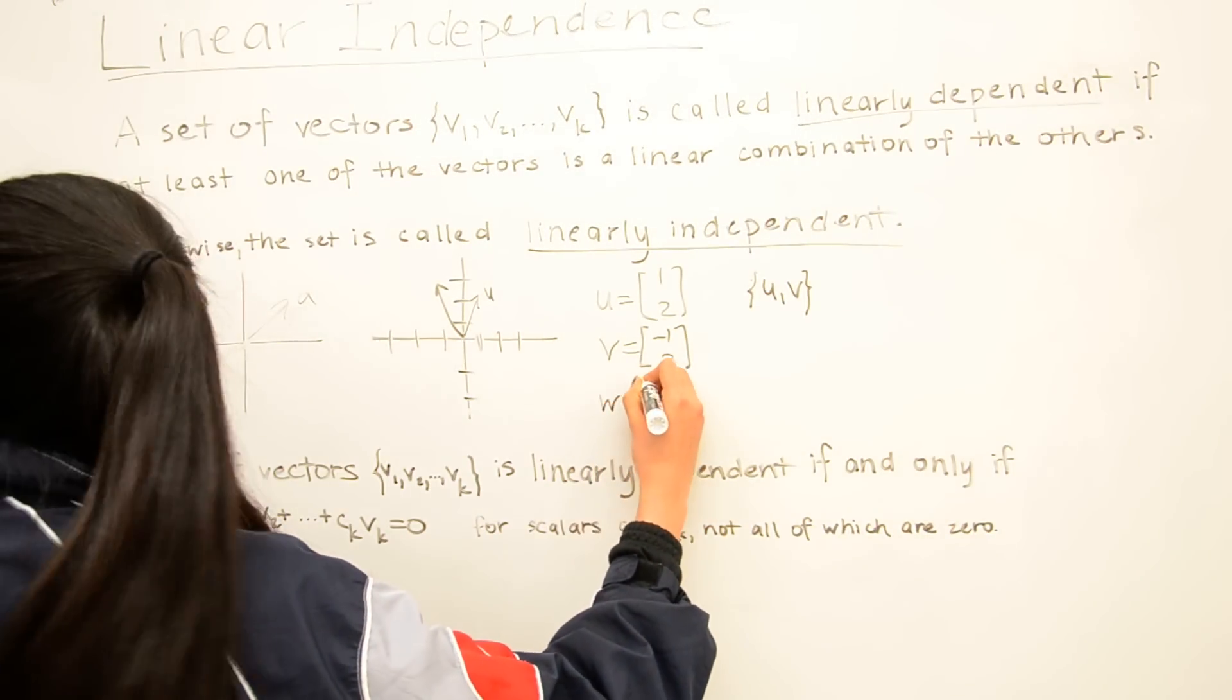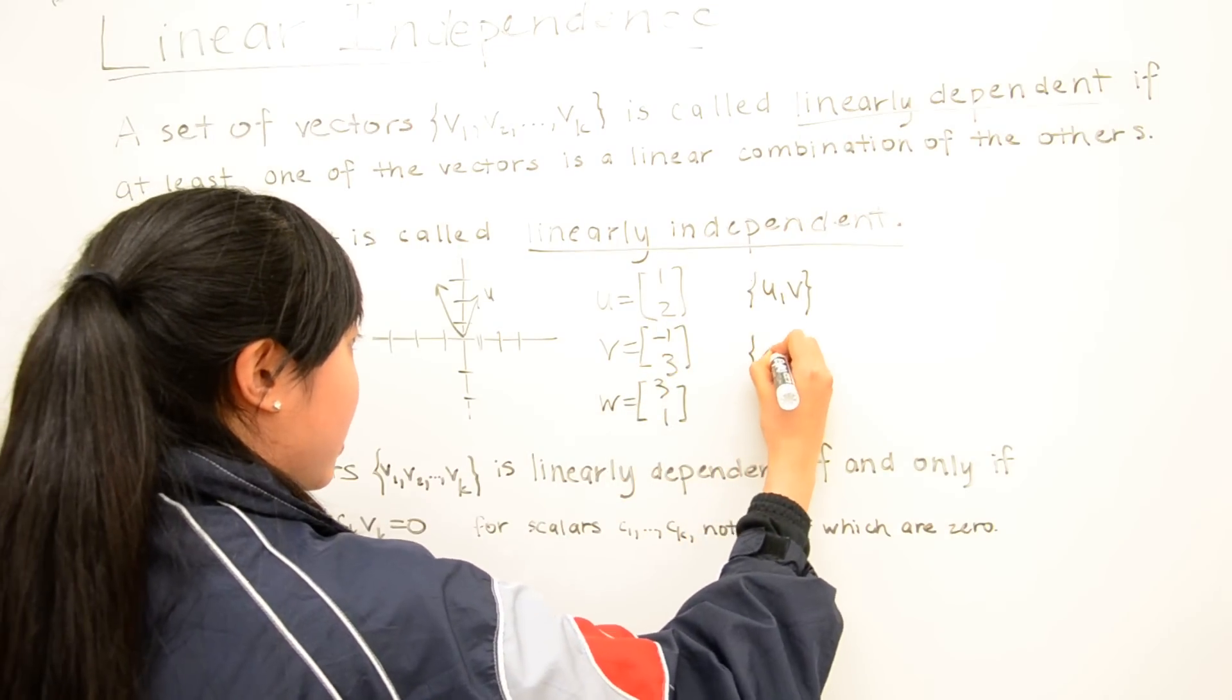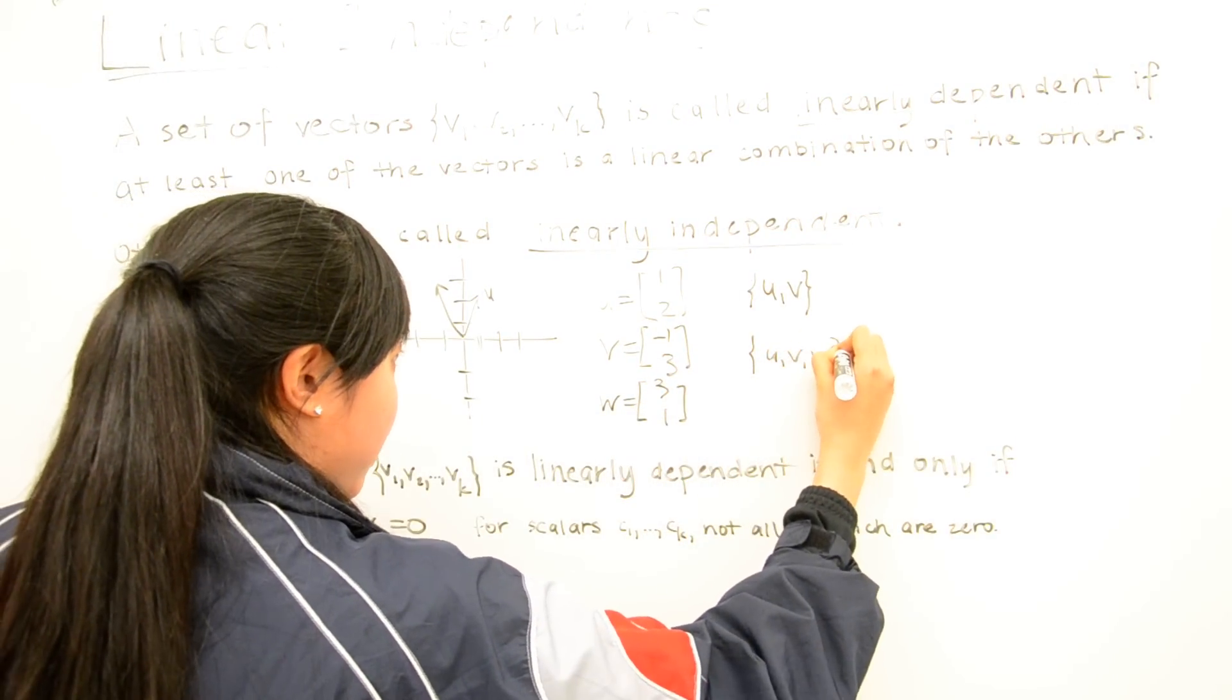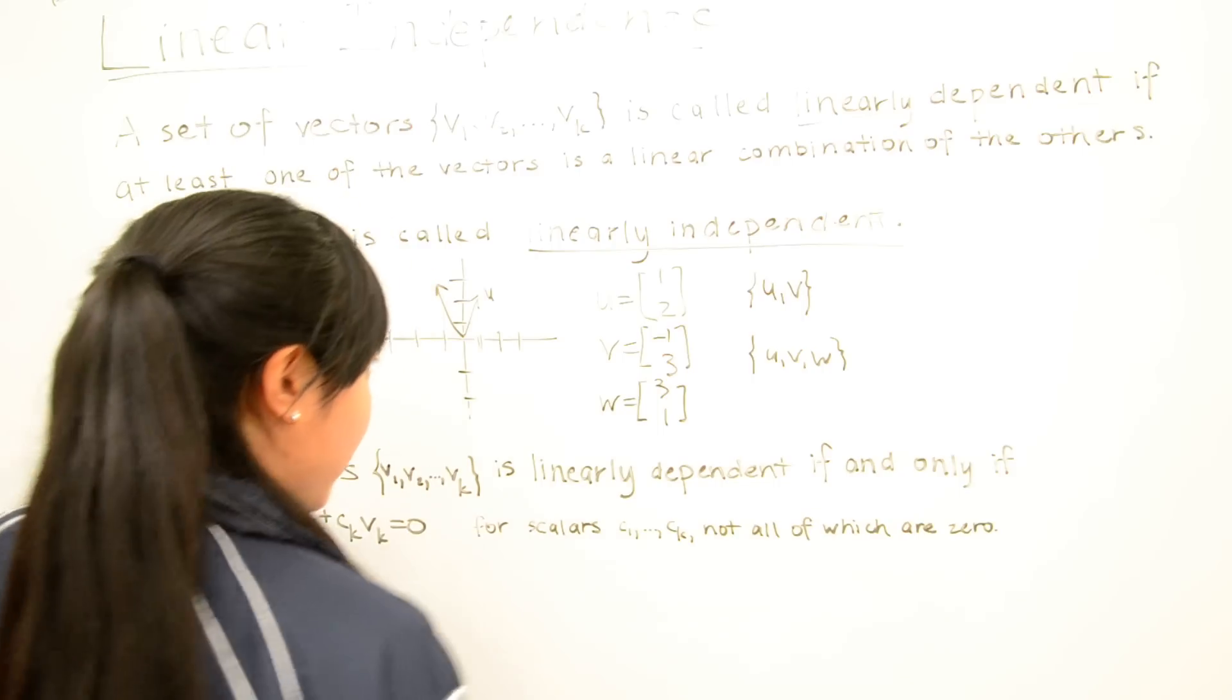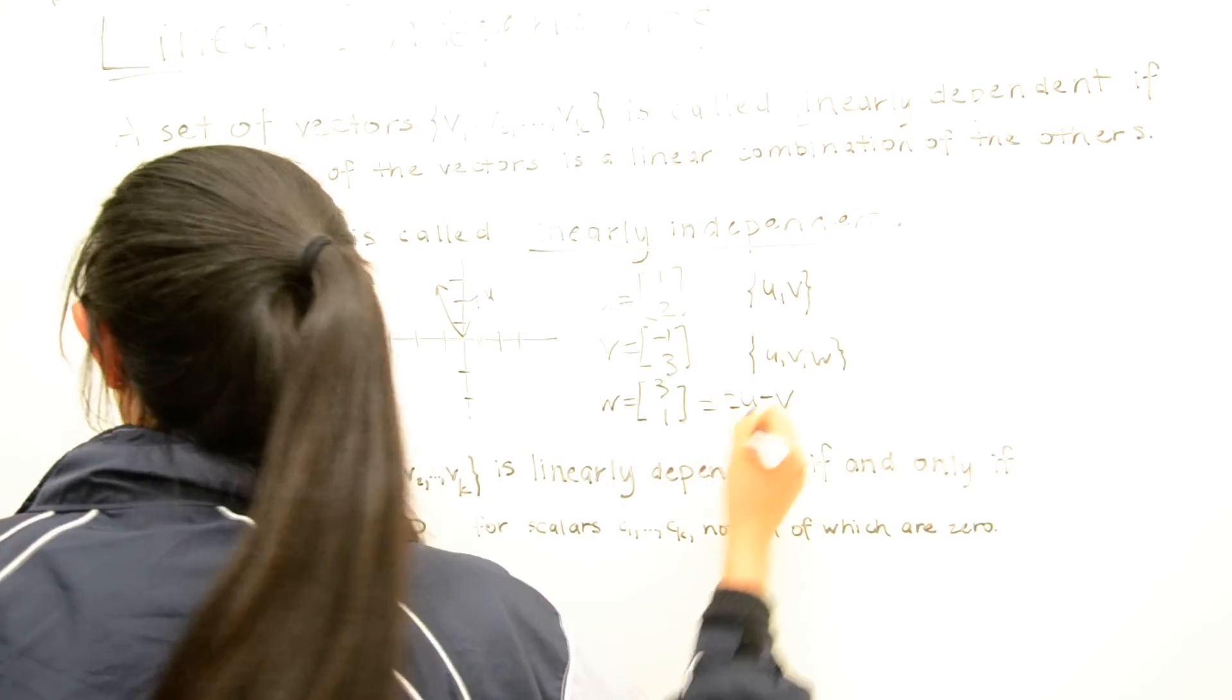But if we have a vector w which is (3, 1), then the set {u, v, w} is linearly dependent because w equals 2u minus v.